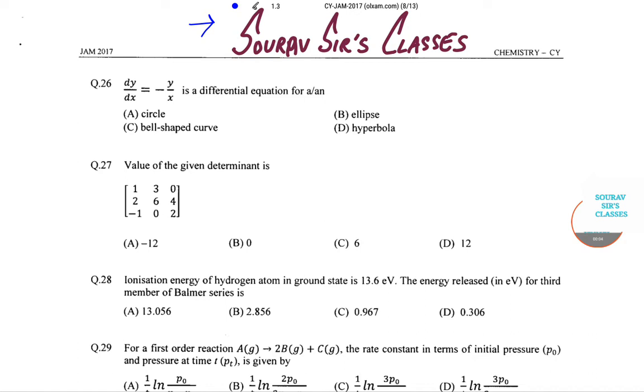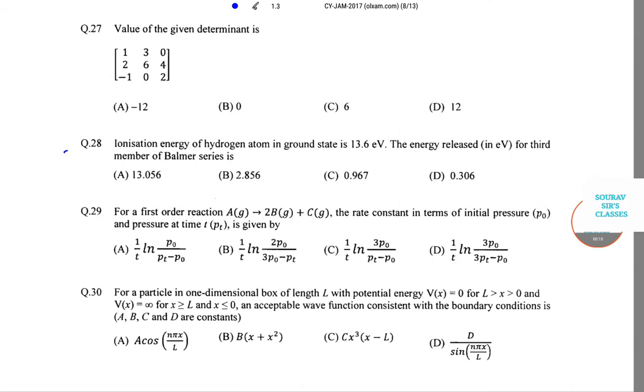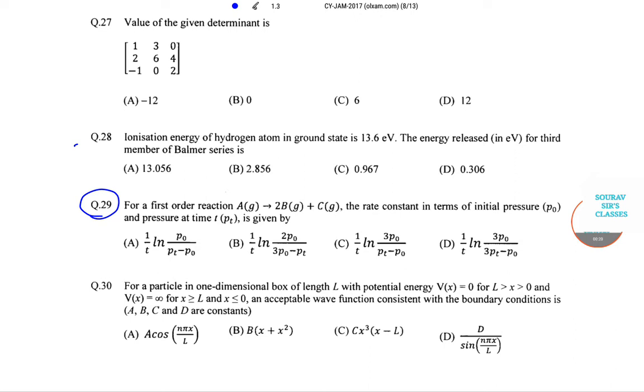Hello and a very warm welcome to Sorosur's classes. In today's tutorial we will solve IIT JAM 2017 paper of the subject chemistry. We have already solved from sum number 26 to 28 so today we will start the tutorial with sum number 29.